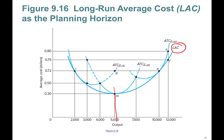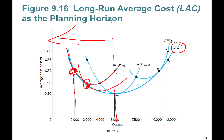This is the minimum point of the long-run average total cost curve. A short-run average total cost curve tangent to the long-run average cost curve to the left of that minimum point — in the economies of scale region — will be tangent at a quantity less than its own minimum point. So the tangency point indicates an output level smaller than the minimum of that short-run average total cost curve.